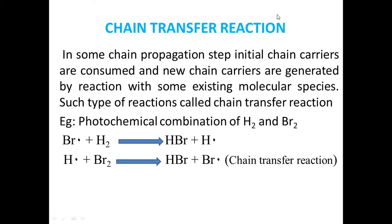Today we will discuss Chain Transfer Reaction. Here we can see that the Bromine free radical attacks the Hydrogen molecule to form HBr plus H free radical. Then the H free radical attacks another reactant molecule, that is Bromine molecule, to form HBr plus Bromine free radical. In the first reaction, there is a formation of H free radical. In the second reaction, there is a formation of Bromine free radical. Here, the free radical is transformed — the H free radical is transformed to Bromine free radical. This is called Chain Transfer Reaction.